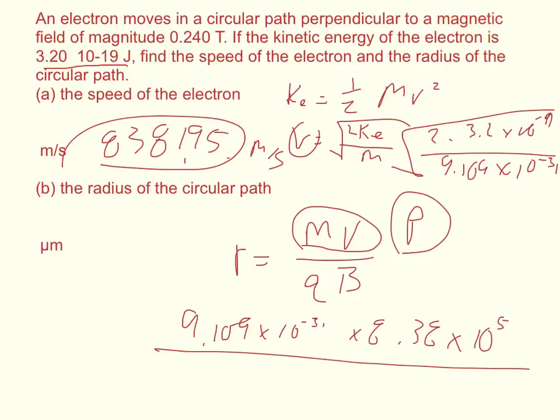And then we're going to divide that by the charge, which the charge on an electron is 1.6 times 10 to the negative 19th, and we're going to multiply that by the magnetic field, which it gives us as 0.24.